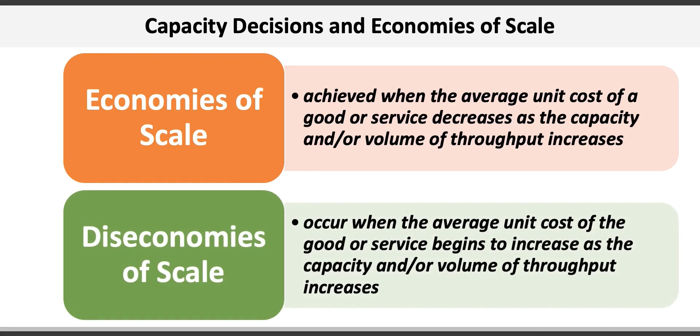Diseconomies of scale occurs when the average unit cost of the good or service begins to increase as the capacity and or volume of throughput increases. For example, as the number of rooms in a hotel continues to increase, the average cost per unit begins to increase because of a larger amount of overhead and operating expenses required by higher levels of amenities like parking, restaurants, and recreational facilities.